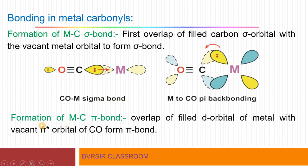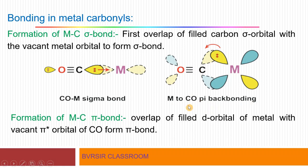In the second stage, the M-C pi bond forms. This involves the overlap of the filled d orbital of the metal with the vacant pi star orbital of CO to form a pi bond. Observe the diagram for clarity: the electron pair on the metal donates back to the carbon monoxide into the vacant pi star orbital. This back-donation forms the M-C pi bond, and this entire concept is called backbonding.